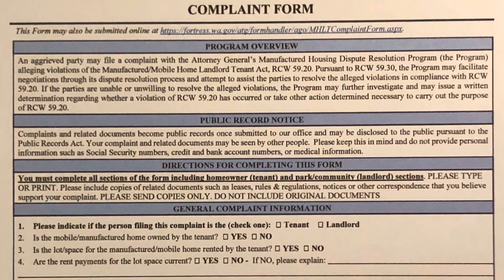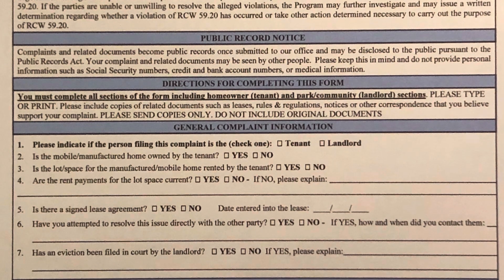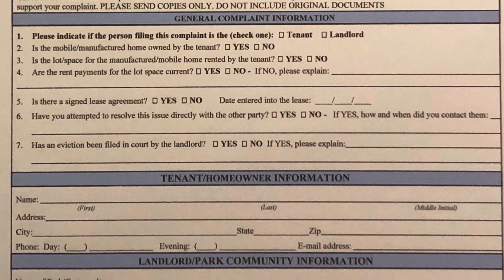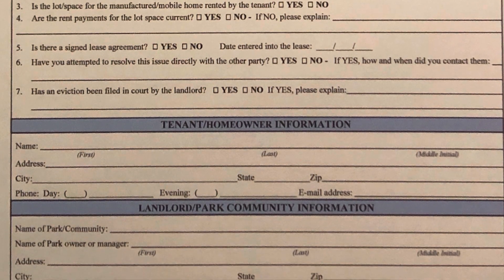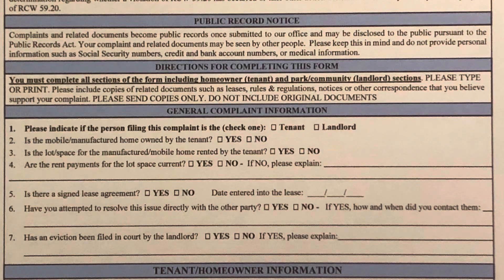Welcome. This video is designed to help you fill out the Manufactured Housing Dispute Resolution Program complaint form for Washington State. The public record notice on the form says: complaints and related documents become public records once submitted to our office and may be disclosed to the public pursuant to the Public Records Act.